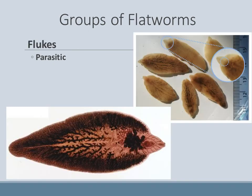The last group of flatworms are the flukes, which are also parasitic. These specific examples are liver flukes, which can be found in the intestines or liver of deer. If you are out hunting and cutting open a deer and find weird nodules or things burrowed in the liver, they may be deer flukes.